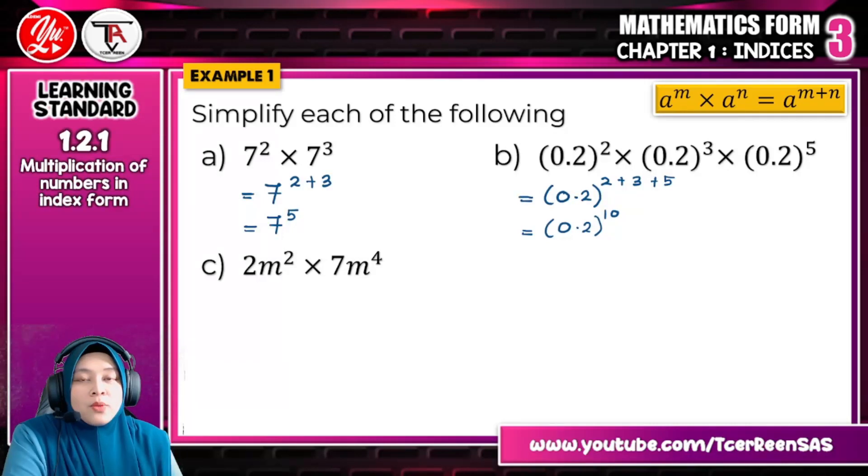Question C. You got something new here. You can see number 2 and 7, but don't be confused. Actually, for this question, you have same base which is m. The variable here is m, so the same base. But this is what we call coefficient. If you cannot remember it, you can revise back from Form 1 about algebraic expression, what is coefficient. Nombor-nombor di depan ini kita panggil pekali dan ini adalah variable, pemboleh ubah. So kita tengok pada pemboleh ubah, pemboleh ubahnya sama jadi kita boleh gunakan law of indices.